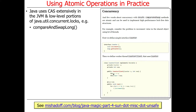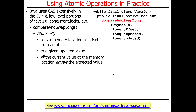compareAndSwapLong is something that's part of the Unsafe class, which you can read about at this link. It allows us to atomically set a memory location at an offset from an object — we'll talk more about that in a second — to a given updated value if and only if the current value at the memory location equals the expected value. This is very similar to what we looked at before with the general discussion of compare-and-swap, except now we're talking about what Java is doing as opposed to what happens at the hardware level.